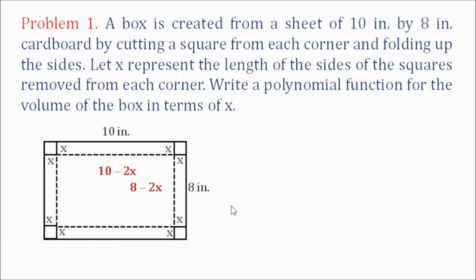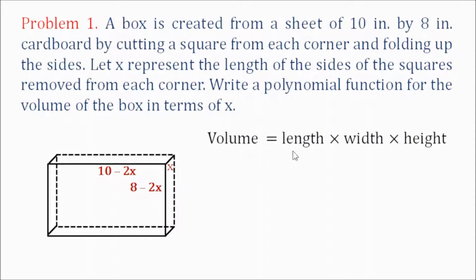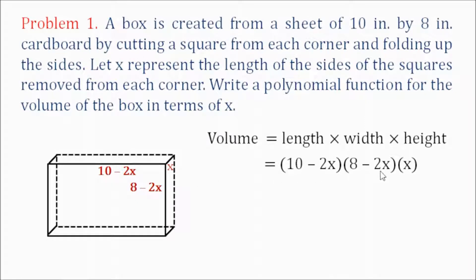Now we form a box. Our length is 10 minus 2x, our width is 8 minus 2x, and our height or thickness is x. To find the volume of this box, we use the formula: volume equals length times width times height. So we have the length as 10 minus 2x, the width as 8 minus 2x, and the height as x.